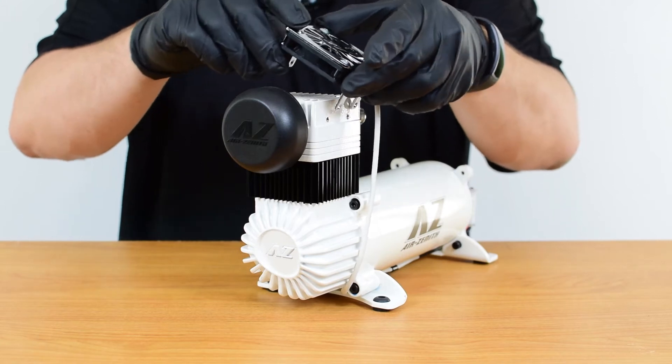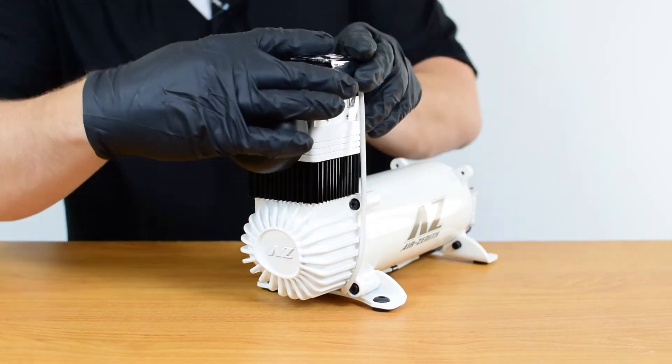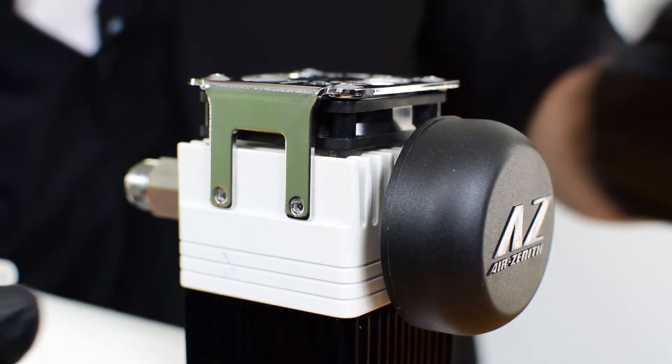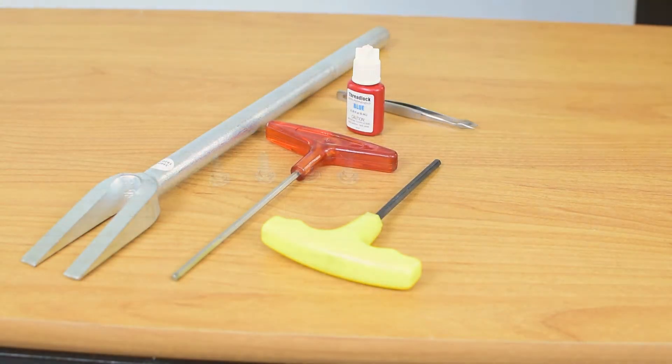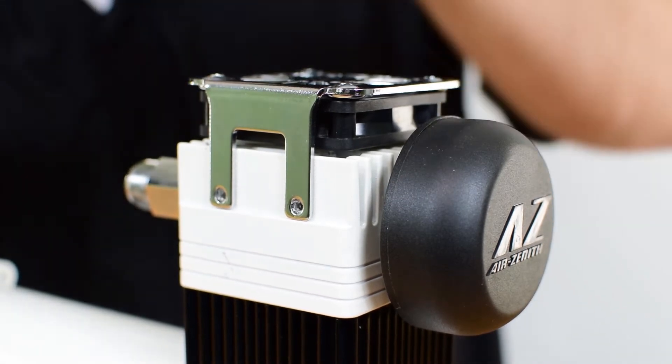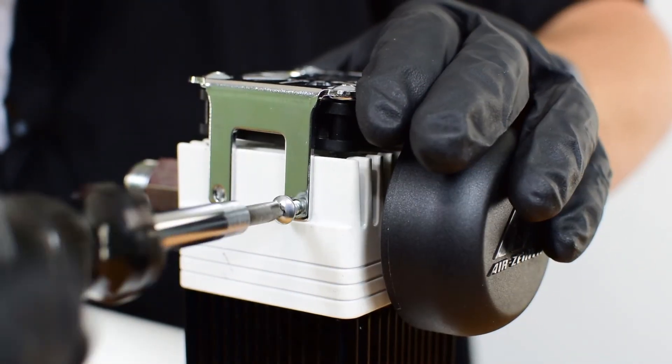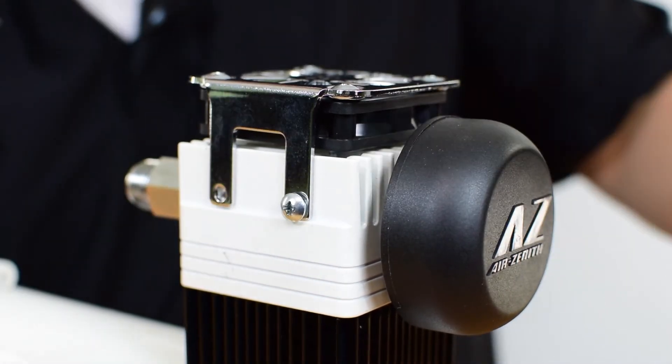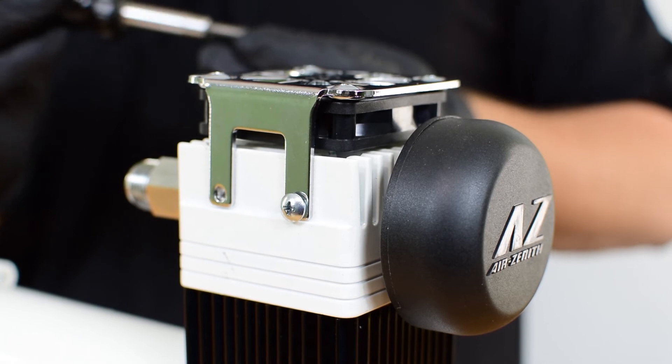You can now reattach the fan assembly by sliding it down onto the top of the head of the compressor, lining it up with the bolt holes. You want to grab your P2 Phillips screwdriver and your screws. You can now thread these screws back into the holes. Being that they're self-tapping screws going into anodized aluminum, they may be a little tight. This is normal. You don't have to worry about cross threading, for they make their own threads.